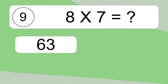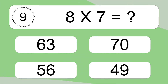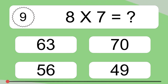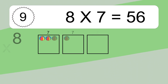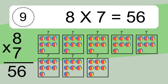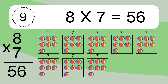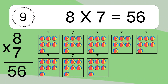Eight times seven equals what? Eight times seven equals fifty-six. We have eight boxes, and each box has seven colorful balls inside. If you count all the balls in all the boxes together, you will have eight times seven balls. This equals fifty-six balls.